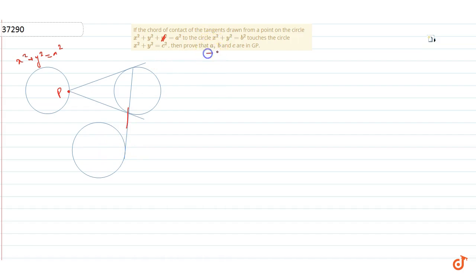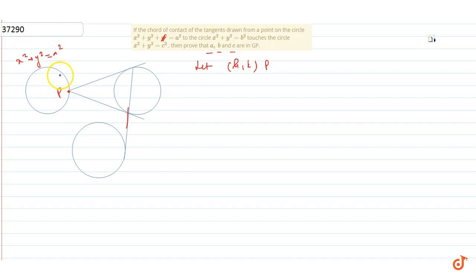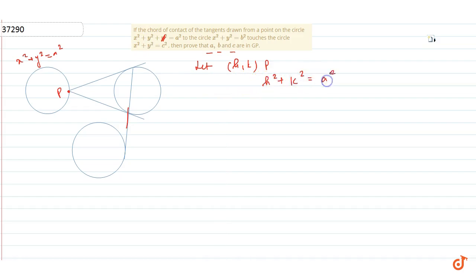Ab, let us assume ki (h, k) is a point P on this circle x²+y²=a². So that means (h, k) point first circle ko satisfy karega, to equation aa jae gi: h²+k²=a².